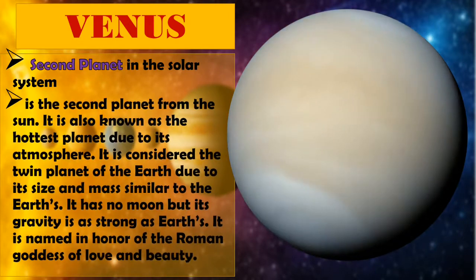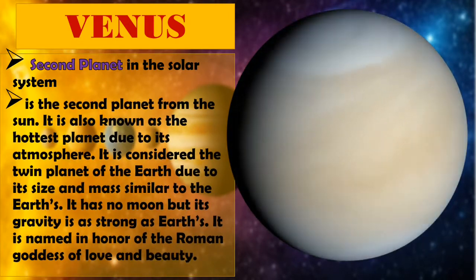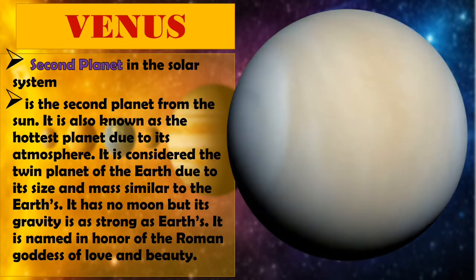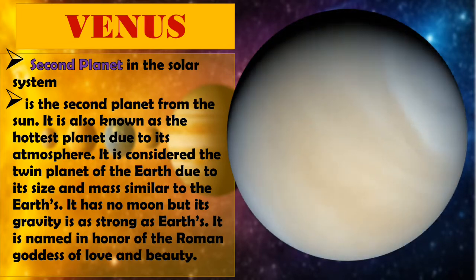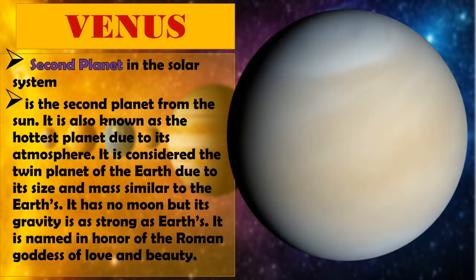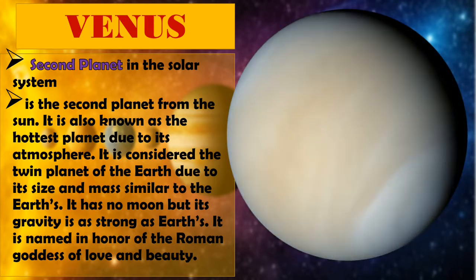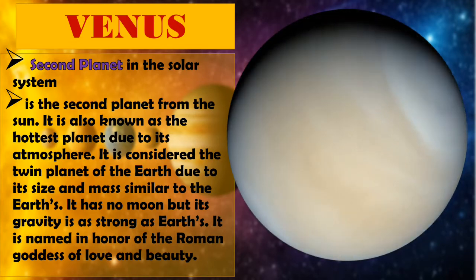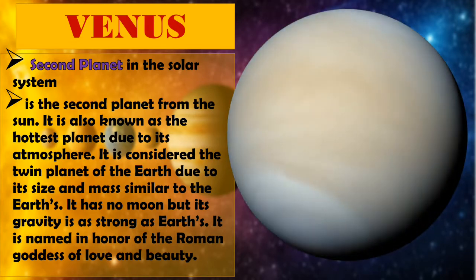Venus, second planet in the Solar System, is the second planet from the Sun. It is also known as the hottest planet due to its atmosphere. It is considered the twin planet of the Earth due to its size and mass similar to the Earth. It has no moon but its gravity is as strong as Earth. It is named in honor of the Roman Goddess of Love and Beauty.